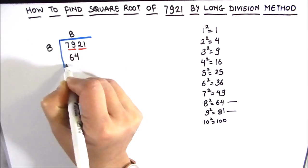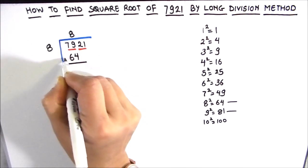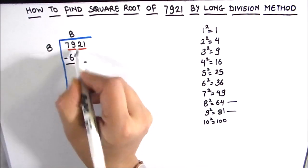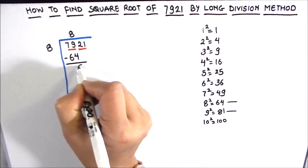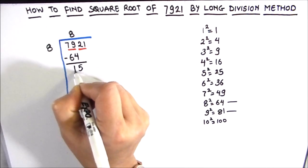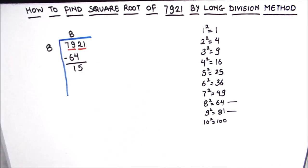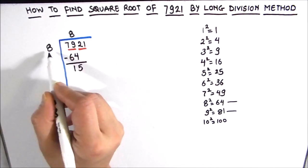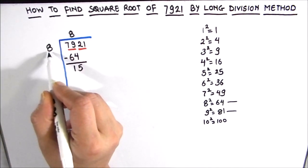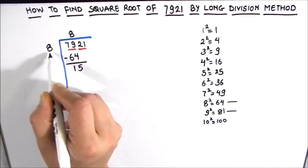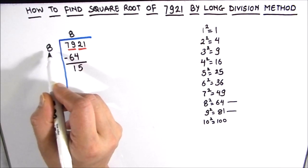We subtract 64 from 79: 9 minus 4 is 5, and 7 minus 6 is 1, giving a remainder of 15. The next step is to add the same number to the divisor — that is, take twice the divisor.